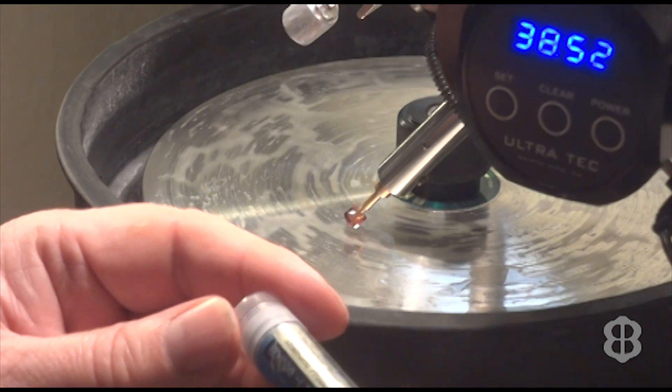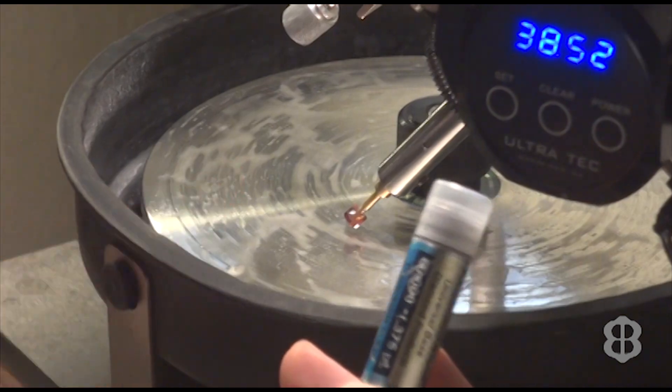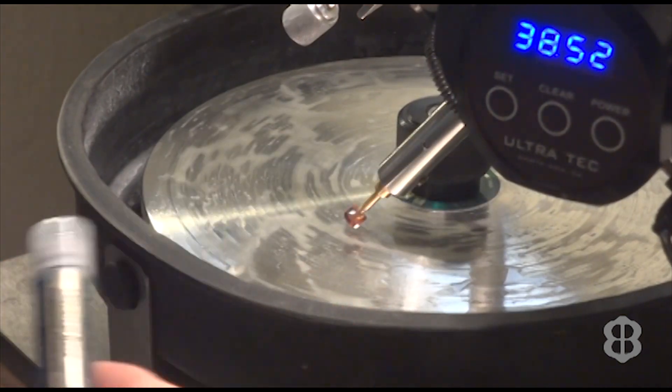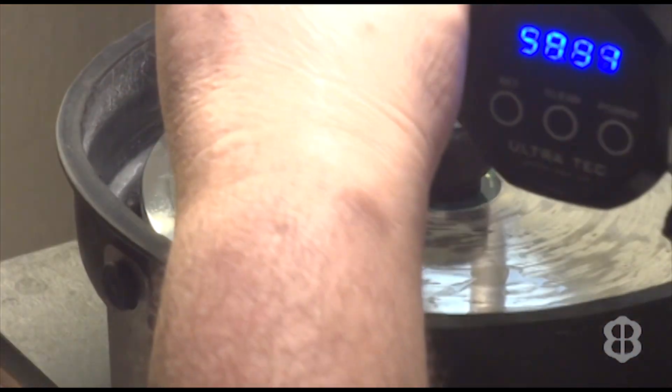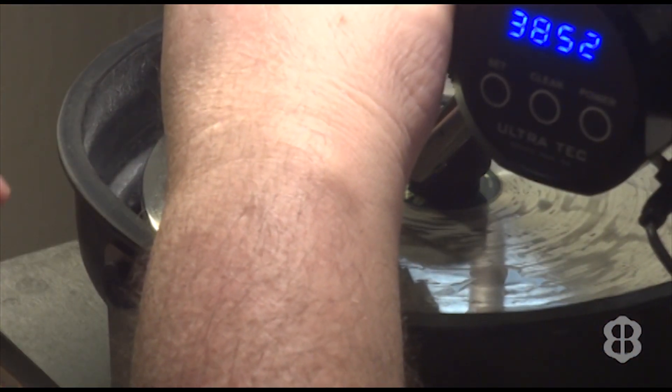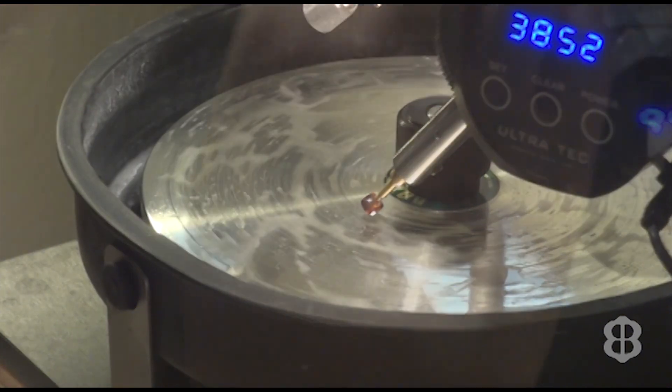Now this diamond grit, you can either use water or you can spray your lap with liquid wrench or WD-40 and use oil. Either one will work. I prefer water, and the reason is when I'm checking the facet after I've cut it, if I use the WD-40 it's hard to wipe the oil off.